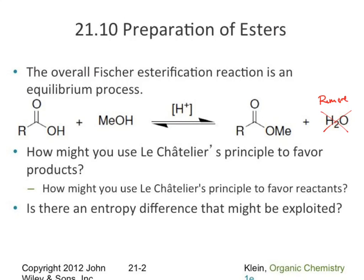Most ester reactions are run with a catalyst because it's a relatively slow reaction, so we add the catalyst to speed up the mechanism and get to our products faster. But it speeds the reverse reaction equally, so it's not going to favor products overall.